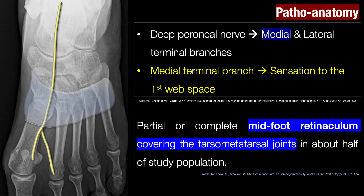There is a midfoot retinaculum at the level of the metatarsal joints, which we really don't speak much about, but it is really important pertaining to this case. There's a great article in the Journal of Anatomy and Cell Biology by Dr. Swathi, where they have described the midfoot retinaculum. In this case, the ganglion is seen arising from the articulation between the medial cuneiform and the second metatarsal base, resulting in compression of the medial terminal branch of the peroneal nerve between the cuneiform and the midfoot extensor retinaculum.